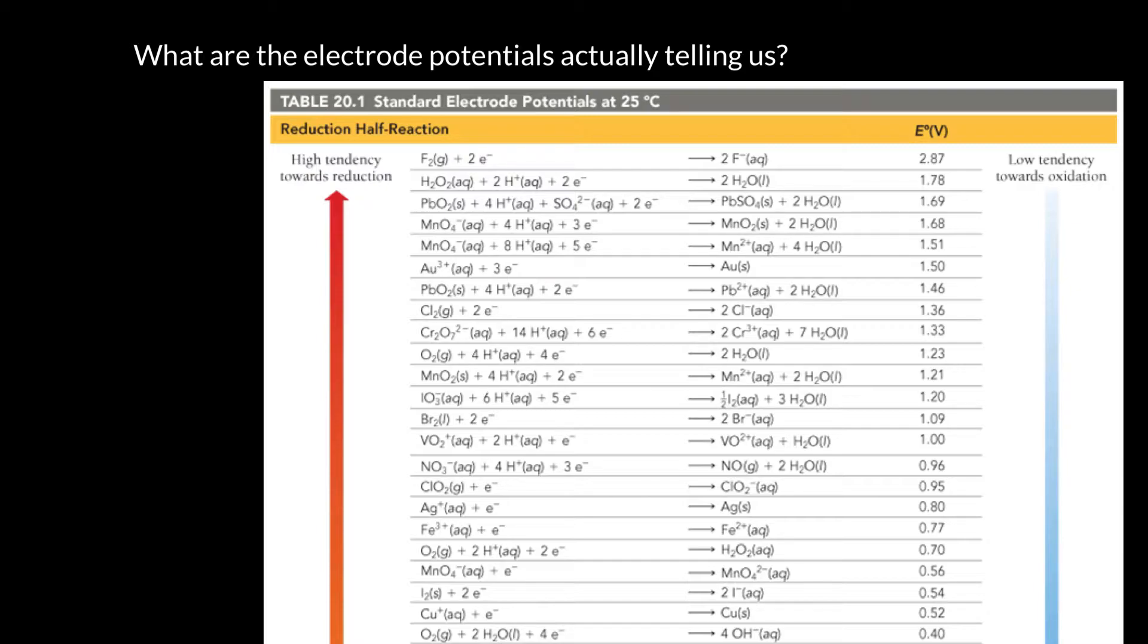So we can interpret the top of this list. Everything on the left-hand side is basically being very good oxidizing agents. So oxidizing agents are things that cause other things to lose electrons. And oxidation is loss of electrons.